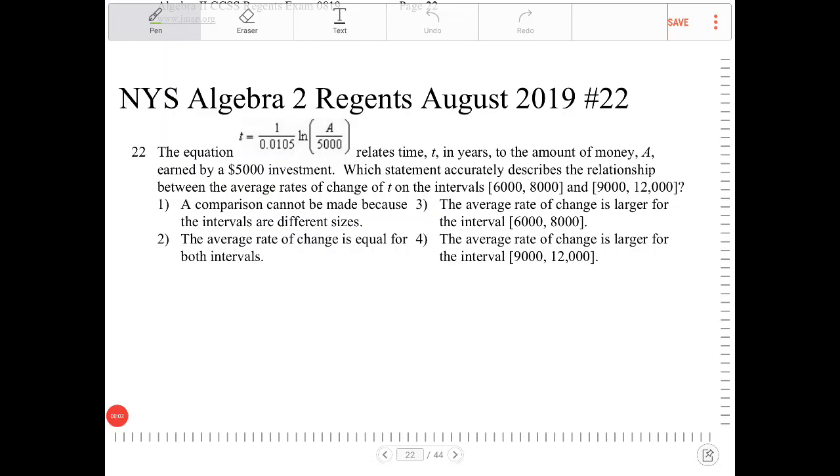The equation t equals 1 over 0.0105 ln of a over 5,000 relates time t in years to the amount of money a earned by a $5,000 investment. Which statement accurately describes the relationship between the average rates of change of t on the intervals from 6,000 to 8,000 and 9,000 to 12,000?